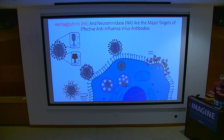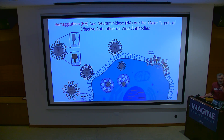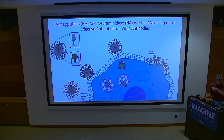I'm not going to talk much about the neuraminidase, but the neuraminidase is drifting at the same rate as the HA, which means NA antibodies are as important as HA antibodies — and these are antibodies that everybody has ignored until recently.